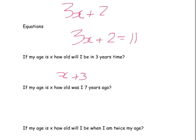If my age is x, how old was I 7 years ago? So my age is x 7 years ago. 7 years ago means we're taken away. So it's x minus 7.